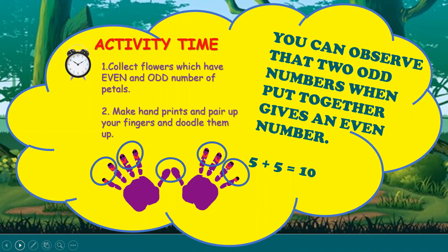There is one more thing to observe here, children. Remember, when we put 2 odd numbers together, we get an even number. Say for example, 5 fingers in each hand. So, 5 plus 5 is equal to 10. 5 is an odd number, whereas 10 is an even number. Try this out with other odd numbers as well.